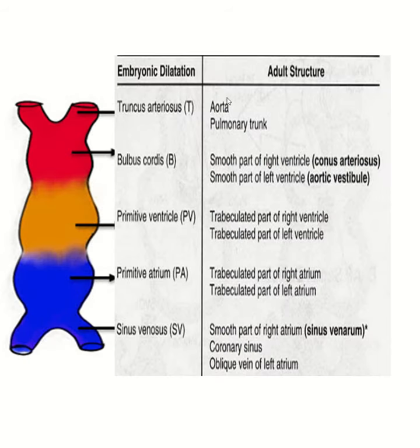From the truncus arteriosus, the aorta and pulmonary trunk are developed. From the bulbus cordis, the smooth part of the right and left ventricle is developed.